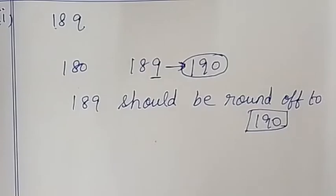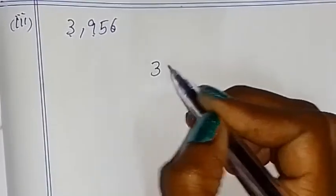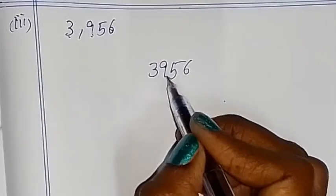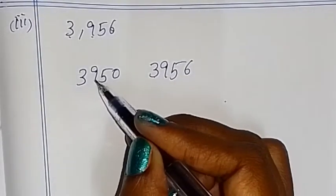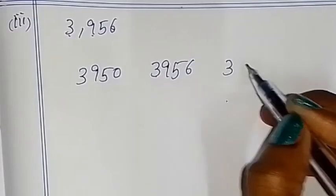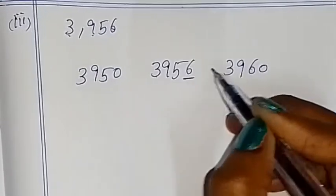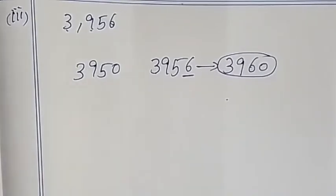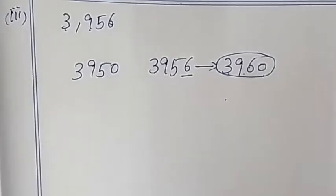This is 3,956. So 3,956 — before the nearest 10 is 3,950, with 3,951, 3,952 in between, and after is 3,960. Now check: the ones digit 6 is greater than 5, so 3,956 should be rounded off to 3,960.